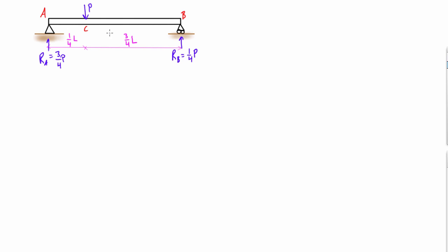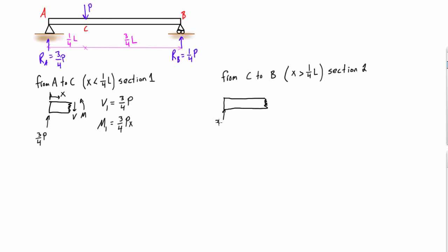The next thing we want to do is figure out from section A to C, what the expression is in terms of x for the internal moment. So the internal moment is three fourths P times x, and it is M1. We're calling this section 1 from A to C. We also want to find out what the moment is in terms of x for the section from C to B. And we get that internal moment in this section is one quarter PL minus one quarter Px.